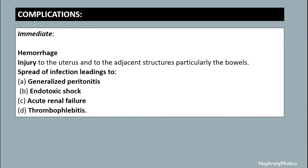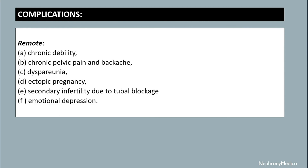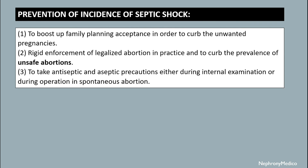Complications of septic abortion: Immediate complications include hemorrhage, injury to the uterus and adjacent structures particularly the bowels, spread of infection leading to generalized peritonitis, endotoxic shock, acute renal failure, and thrombophlebitis. Remote complications include chronic debility, chronic pelvic pain and backache, dyspareunia, ectopic pregnancy, secondary infertility due to tubal blockage, and emotional depression.